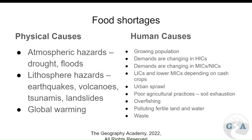Polluting fertile water and land has caused soil degradation and a decrease in yield — the amount of food that we get out of one area of land. And then finally, we have waste as well. Huge amounts of waste means people are buying food, it's being traded, exported and sent around the world, but it's not then being used on time.